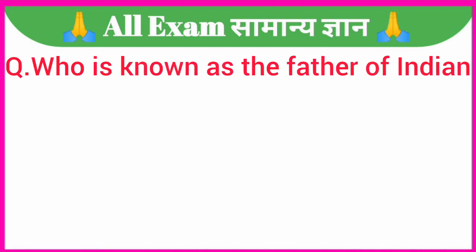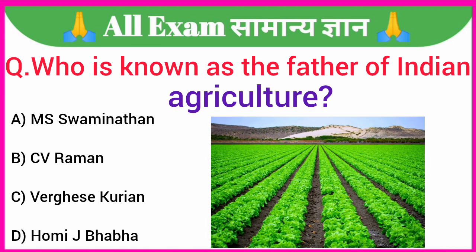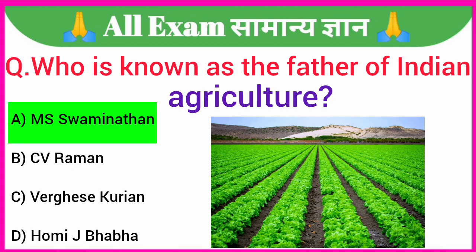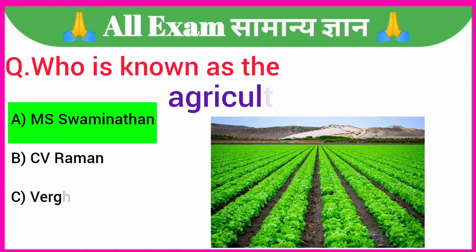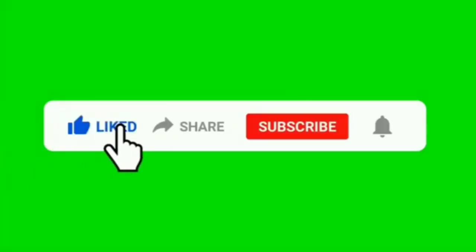Who is known as the father of Indian agriculture? A. M.S. Swaminathan, B. C.V. Raman, C. Verghese Kurien, D. Homi J. Bhabha. Your correct answer is option A — M.S. Swaminathan. Thanks for watching! Please like, share, and subscribe.